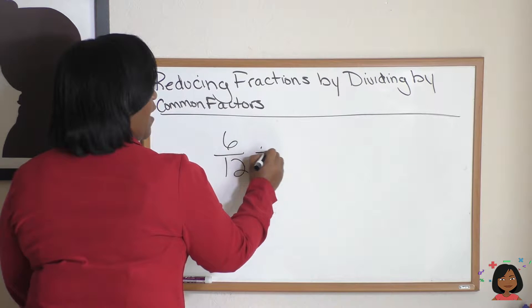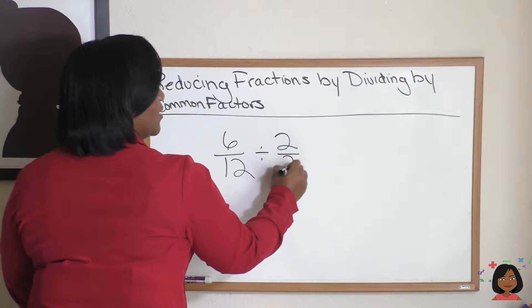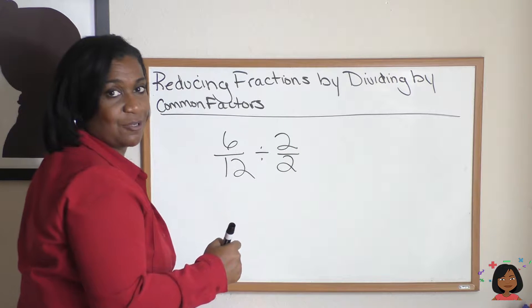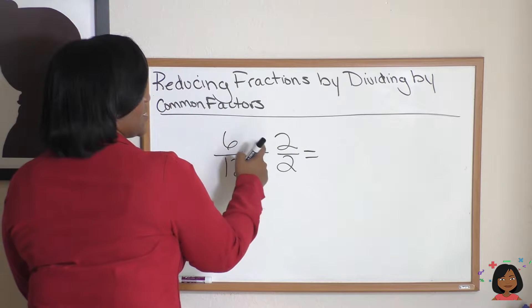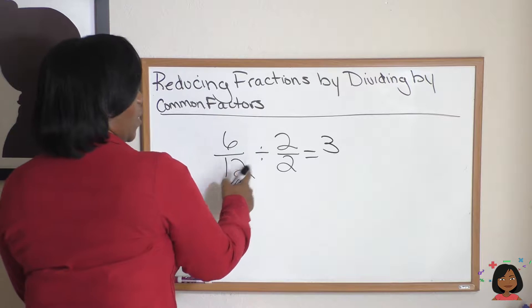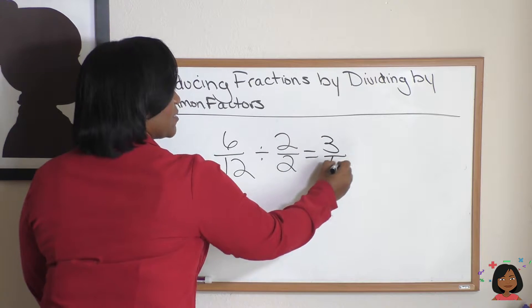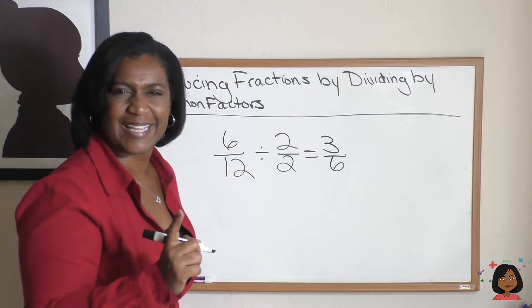So we're going to divide the top by 2 and divide the bottom by 2, and go across. 6 divided by 2 is 3. 12 divided by 2 is 6.